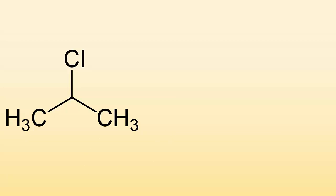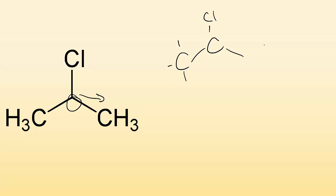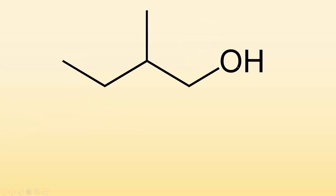This one looks a little different because things are labeled. I've got a CH3 and another CH3 connected to a carbon that has a chlorine coming off it. Then off of that same carbon, going down, there is another CH3. So that's what that structure is.